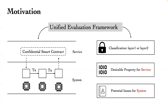Here we introduce our unified evaluation framework. We consider two parts: the smart contract used as services and the underlying supporting blockchain systems. Based on their operating mechanisms and the ways of combination, we investigate and categorize a set of typical protocols into two main classifications: layer-1 solutions and layer-2 solutions. The framework covers two corresponding aspects: desirable properties for contract services and security considerations for underlying systems.